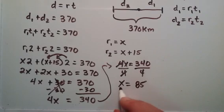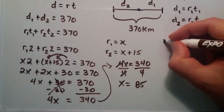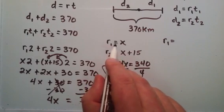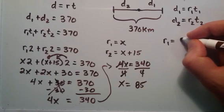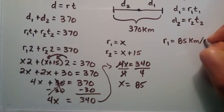We found the rate that car 1 is traveling at. Since r1 equals x and x equals 85, the rate of car 1 is equal to 85 kilometers per hour.